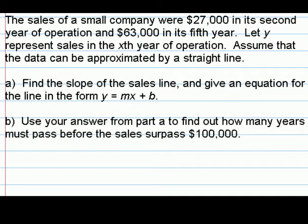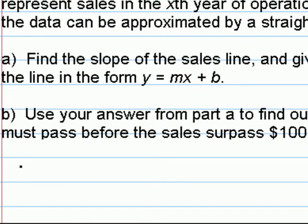To begin, we should recognize that there are two ordered pairs hiding inside of this word problem. Can we see that if we are given a year of operation, we get an output of what the sales were for that particular year? For instance, in the first statement, it tells us that in the second year of operation, sales were $27,000.